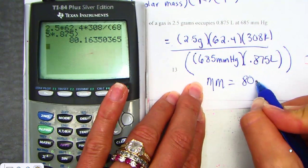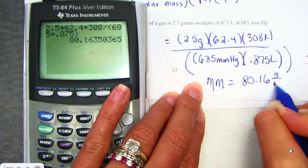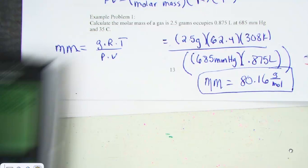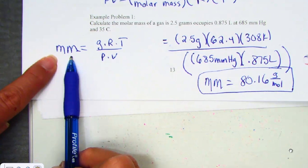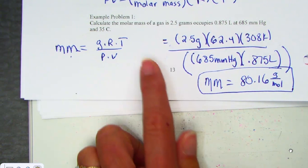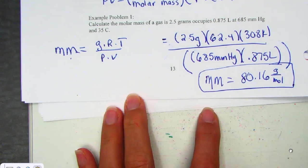So the molar mass, 80.16, and that unit is a gram per mole. Alrighty, so solving for, sometimes you'll hear me call it formula weight or molecular mass of our unknown, GRT over P times V.